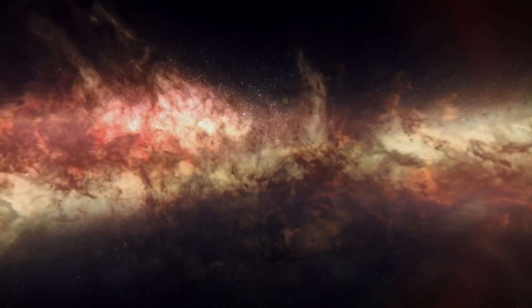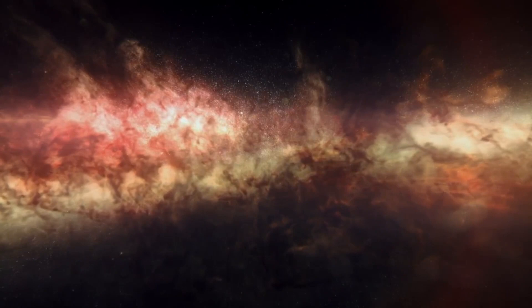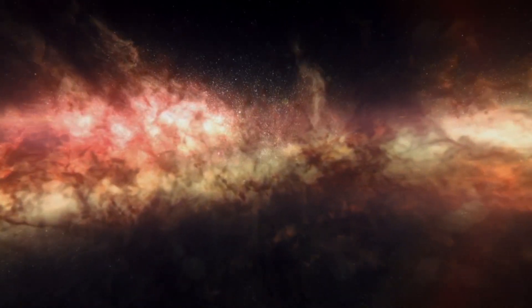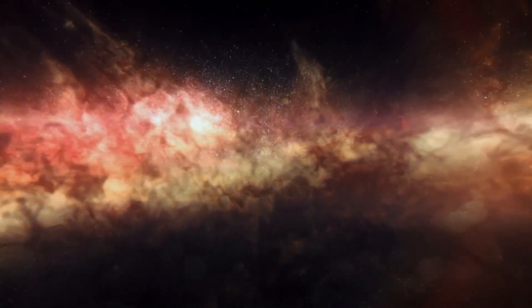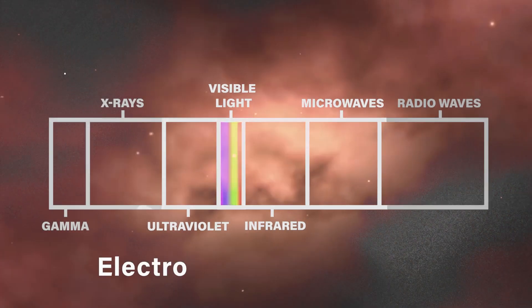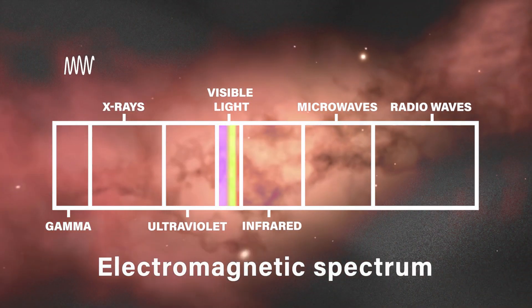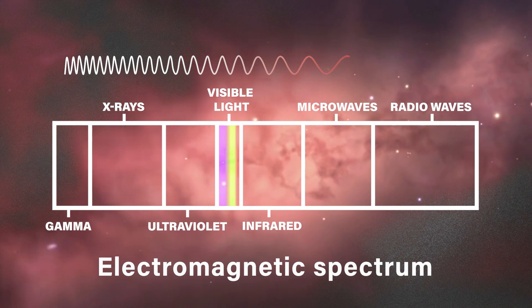In particular, the Webb's infrared capabilities will be crucial in studying the cosmic threads near Sagittarius A asterisk. Infrared radiation, with its longer wavelengths, can penetrate through interstellar dust and gas, allowing astronomers to peer deep into the heart of the Milky Way.